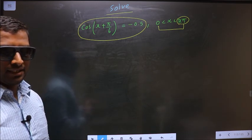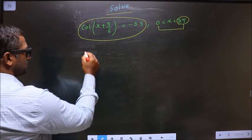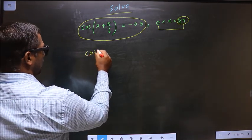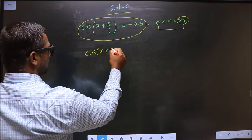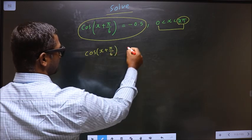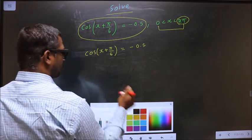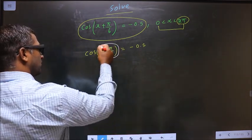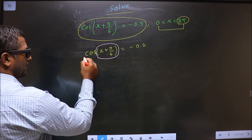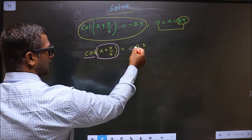Now the given equation is cos(x + π/6) = -0.5. Now to get the values for this, here we have cos and it is negative.